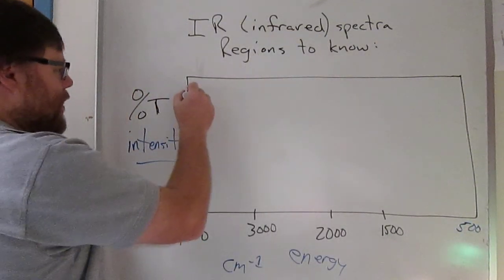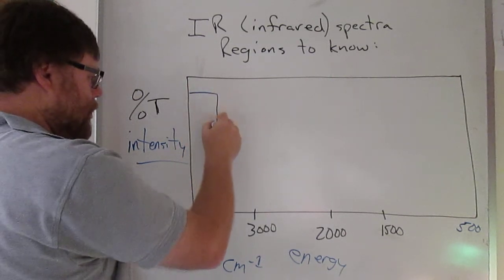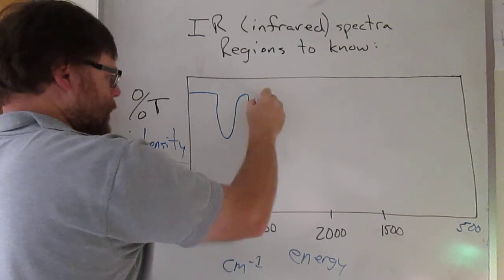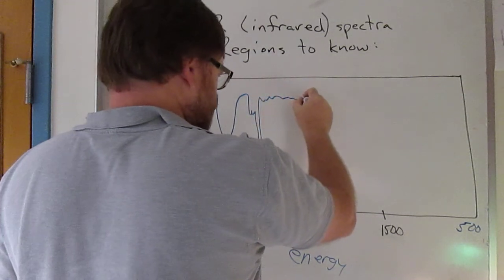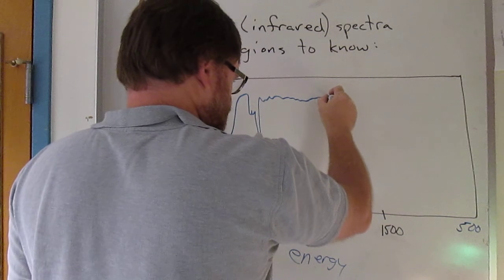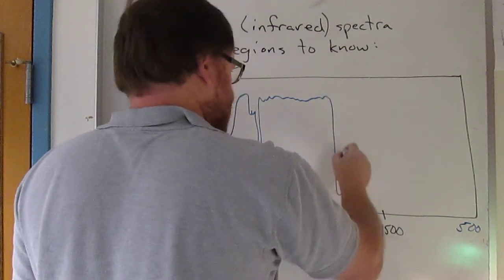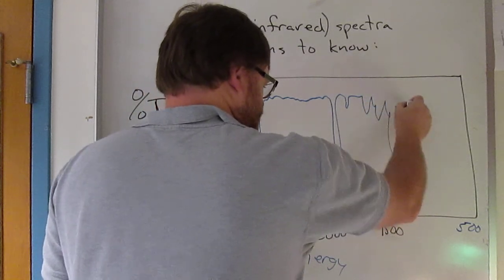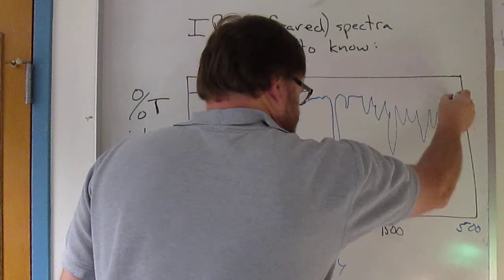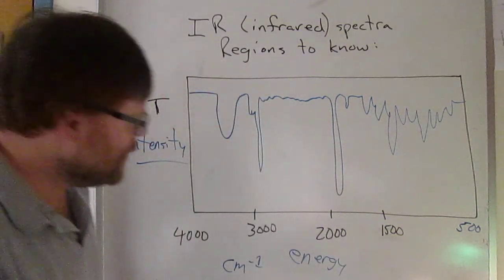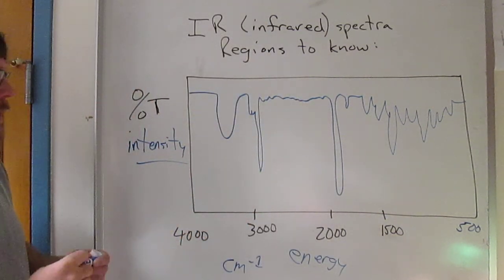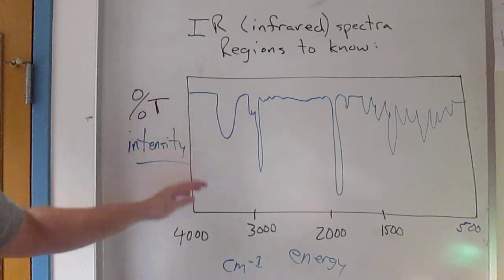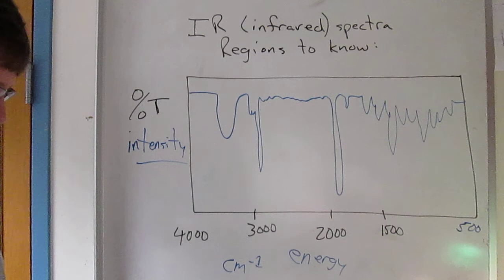So then you're going to have a spectrum might look something like this. So here might be a typical spectrum. Percent transmittance versus reciprocal centimeters.